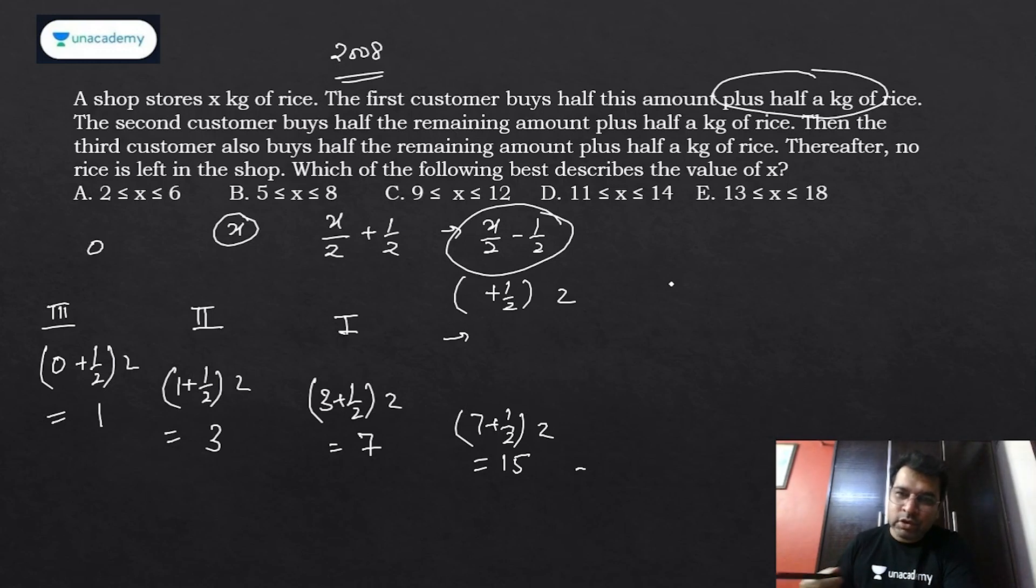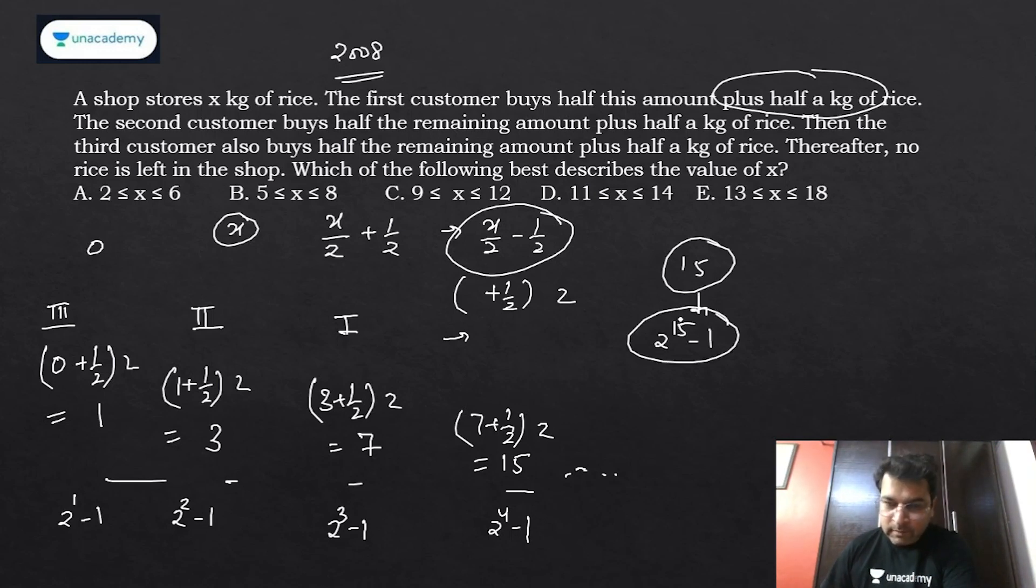Suppose the same question appears with more customers - say 15 customers. It would be a long process, so I need to use sequence and series logic. Following this approach: the series is 1, 3, 7, 15. What is it? You can see it's double plus one: one times two is two plus one is three, double is six plus one is seven, double is fourteen plus one is fifteen. Or you can see this is 2^1 minus 1, 2^2 minus 1, 2^3 minus 1, 2^4 minus 1. You can generalize it, so for 15 customers the answer is 2^15 minus 1.